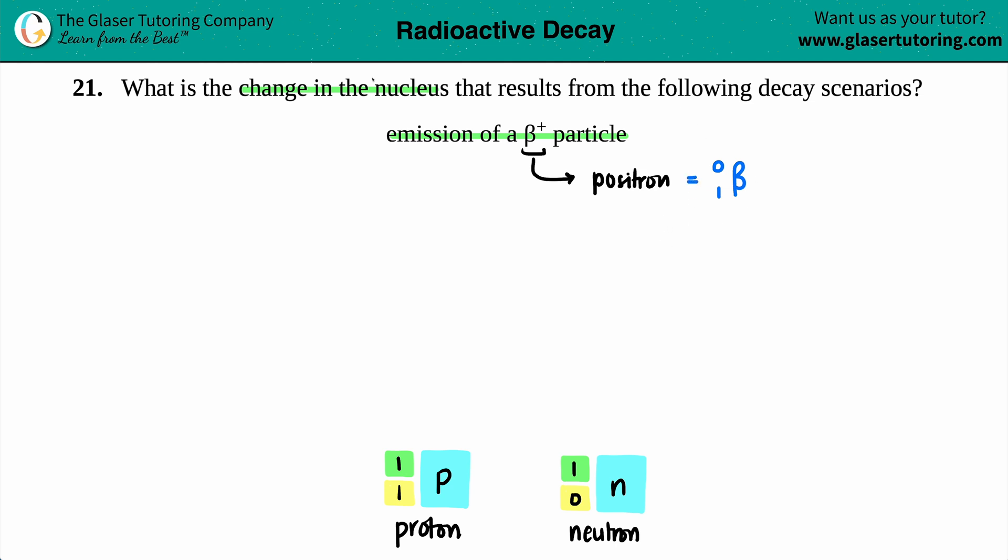But anyway, we want to find out what the change is going to happen in the nucleus, right? And the two subatomic particles that are part of the nucleus, does anyone know? Yeah, right? It's the protons plus the neutrons. Electrons are not part of the nucleus. Positrons are not part of the nucleus. But if you do something with your positrons, maybe there might be a change. So let's see.